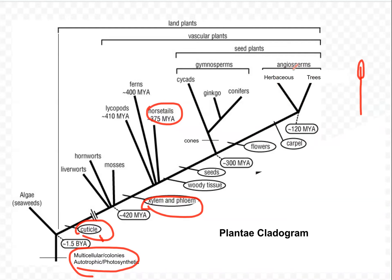The most recently evolved organisms are the angiosperms on the end. At some point, if we come back in another 10 million years or some event occurs, we could see additional evolution. These brackets up here indicate that all of these together are land plants, and then we have vascular plants — those are the ones that have xylem and phloem. If a trait appears after the clad breaks off, we don't have that characteristic.